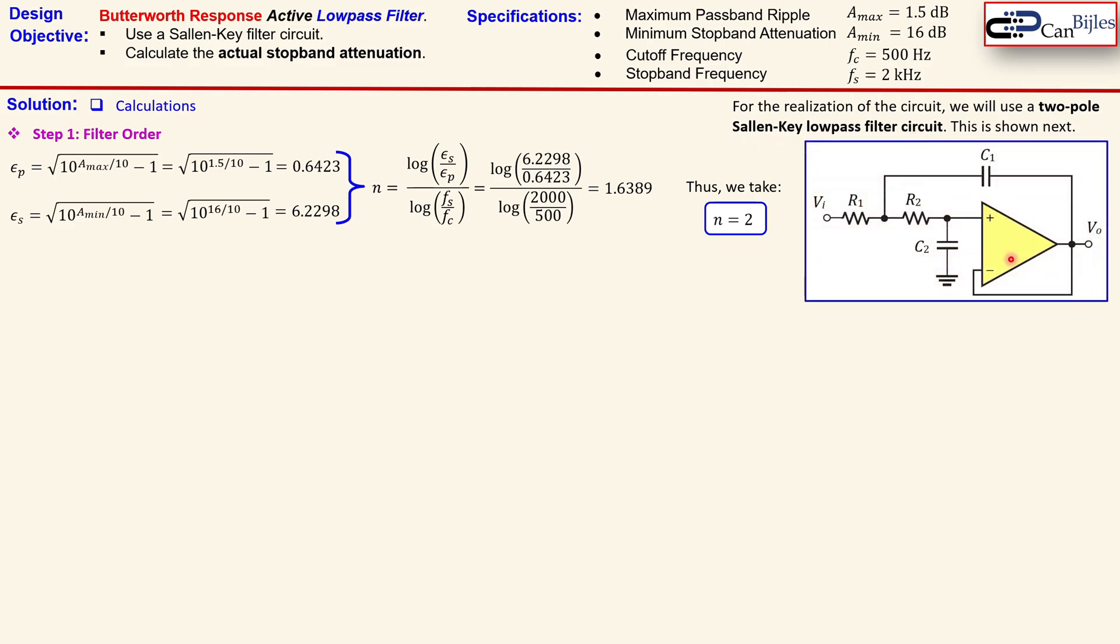You see here the unity gain feedback operational amplifier and we have two resistors R1 and R2 and two capacitors C1 and C2. We will see shortly how we can determine the values by using the Butterworth response table.